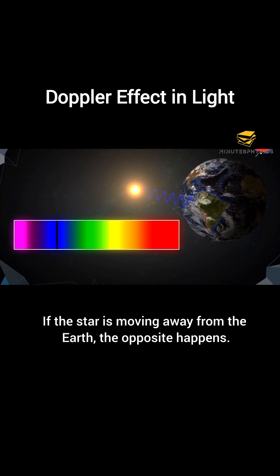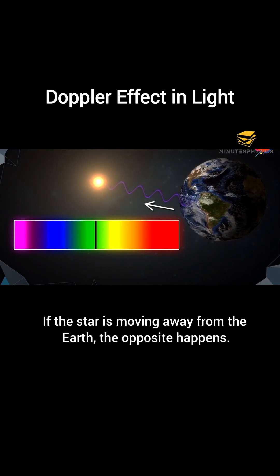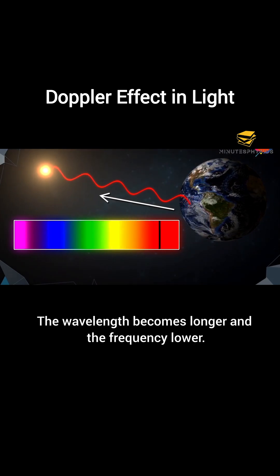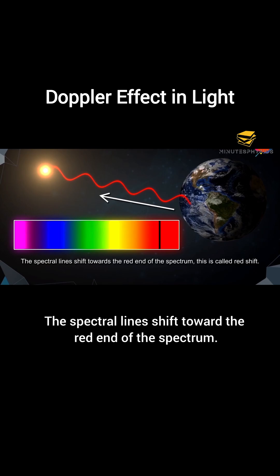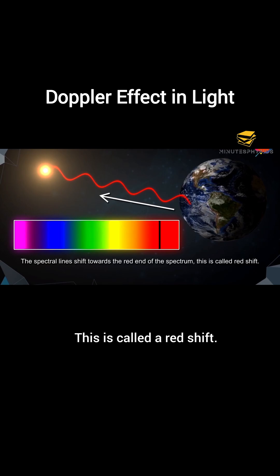If the star is moving away from the Earth, the opposite happens. The light waves get stretched out. The wavelength becomes longer and the frequency lower. The spectral lines shift toward the red end of the spectrum. This is called a red shift.